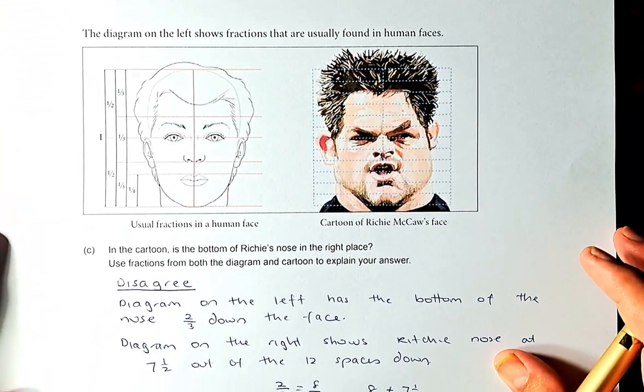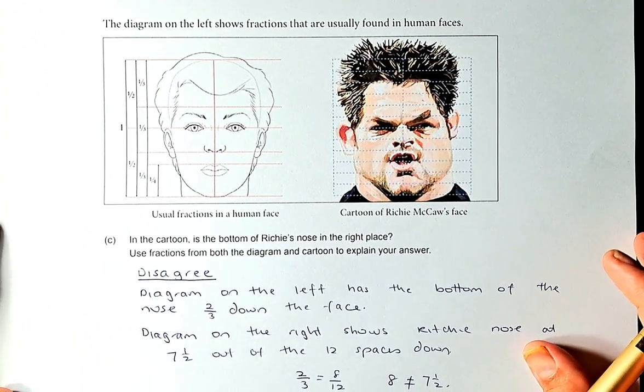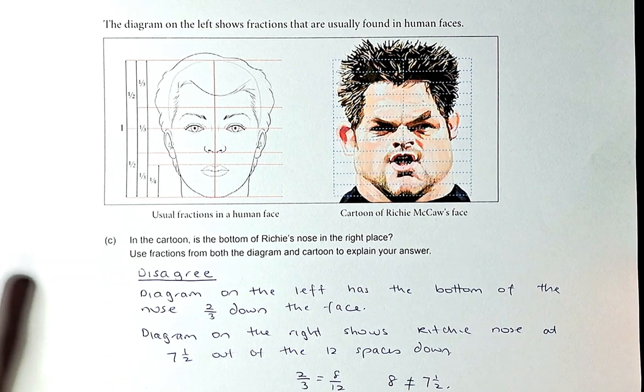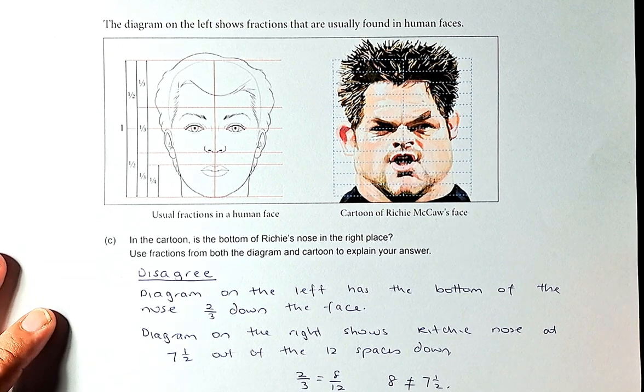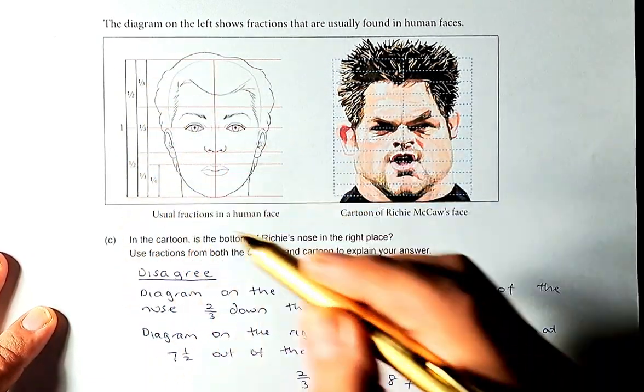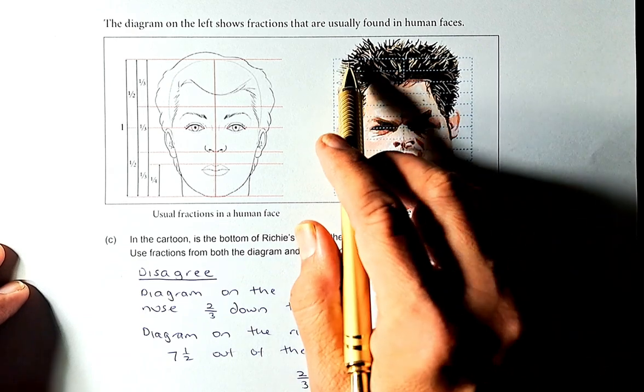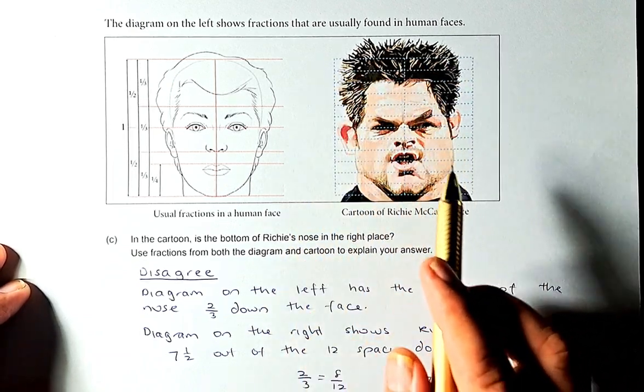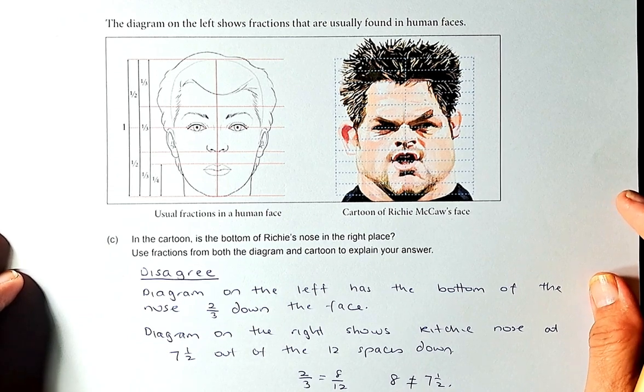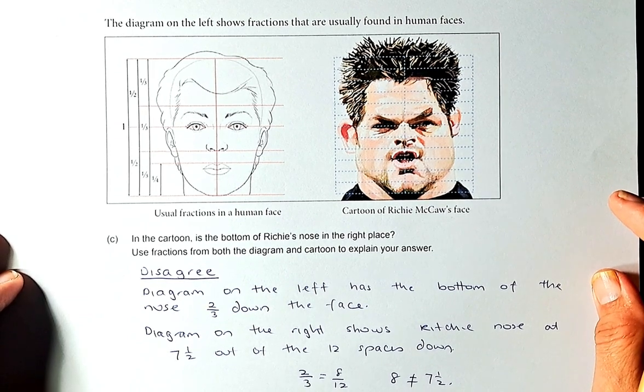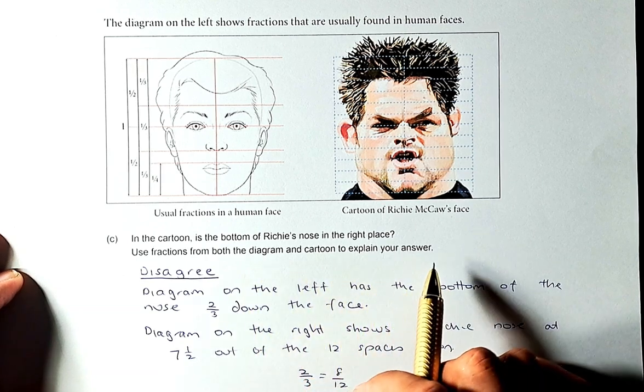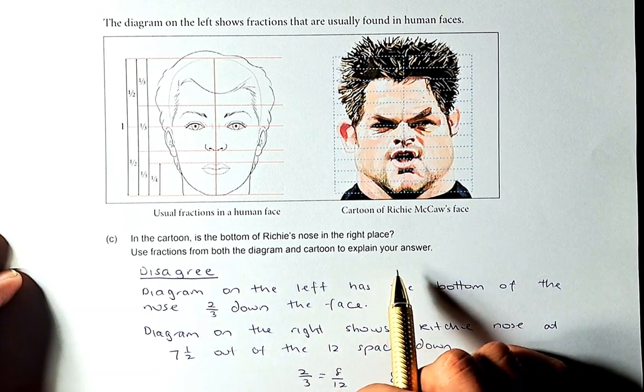2C is about the famous all-black legend, Richie McCaw. The diagram on the left shows the fractions that are usually found in human faces. There's one-third, one-third, one-third. It's half, half. And then it's one-quarter. On this line here, the blue line, they are divided into 12 different blue lines. They ask you: is the bottom of Richie's nose in the right place? Use fractions from both diagram and cartoon to explain the answer. So we are going to use fractions.